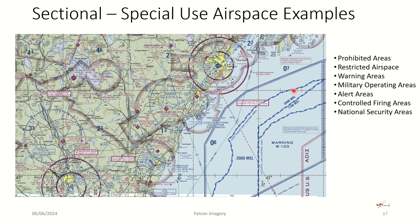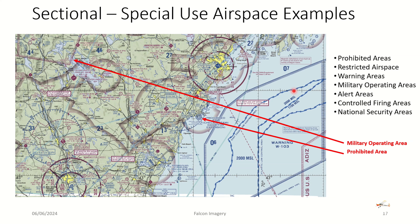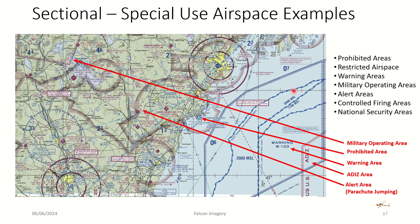Some special use airspace examples: there's the Yankee MOA, a military operating area. There's a prohibited area — the Bush Estate property off the coast of Kennebunkport, Maine. There's a warning area labeled W-103. There's an ADIZ area shown off the coast. And there's a parachute symbol indicating an alert area for parachute jumping.